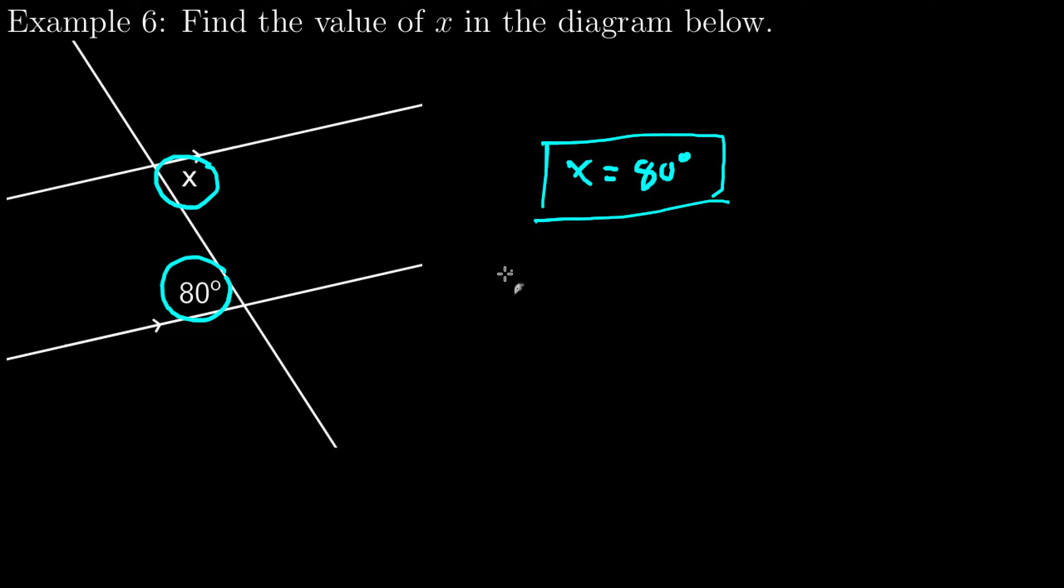If I want to name it, I can see that they are on different sides of the transversal. So that's the term alternate. I see that they are both between the parallel lines, so that's alternate interior, and so these are alternate interior angles.